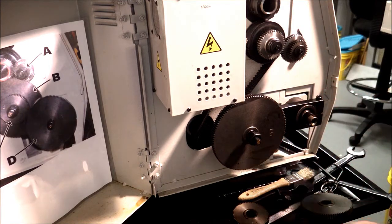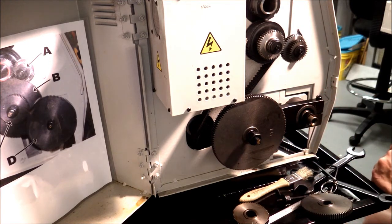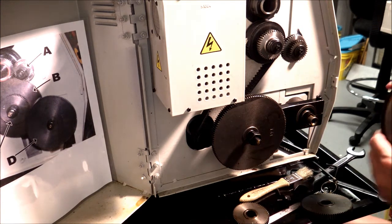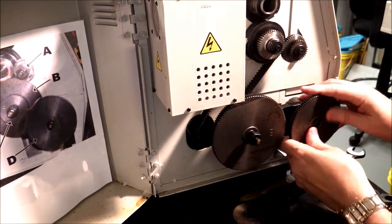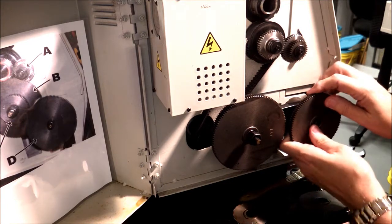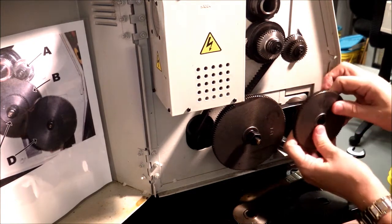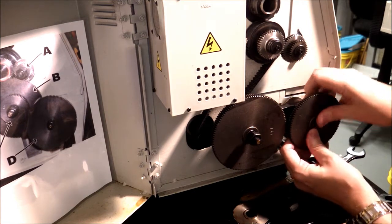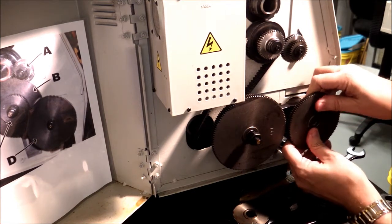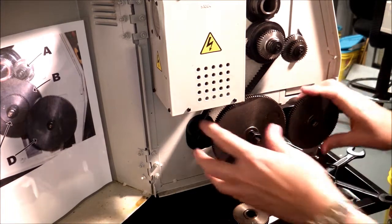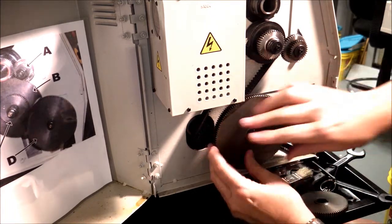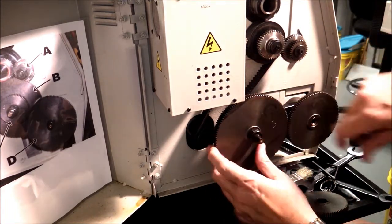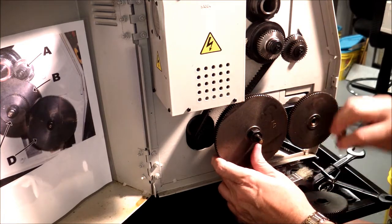And put a 100 gear on there, which happens to run up right here. Bring the 127 back until it contacts it.